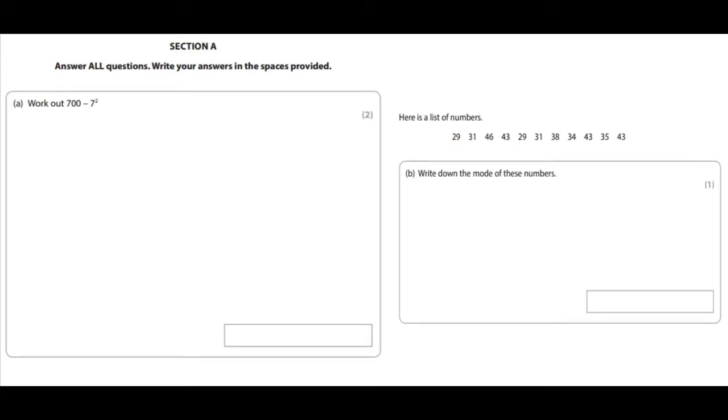Part A is work out 700 minus 7 squared. So this is a test to show that you know the order of operations and that you can do column subtraction with zeros in the top part.